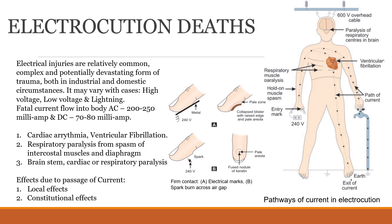To summarize the local effects: wherever the body comes into contact with electricity, a collapsed blister type of damage is seen, along with nodule formation, pale areola, or a fused nodule of keratin. The skin contains keratinous protein which accumulates at one point, forming a slightly thickened area. These are the injuries observable when a body part makes direct contact with an electricity source.